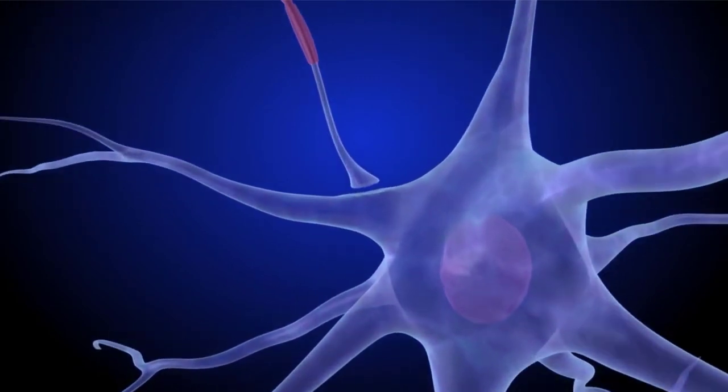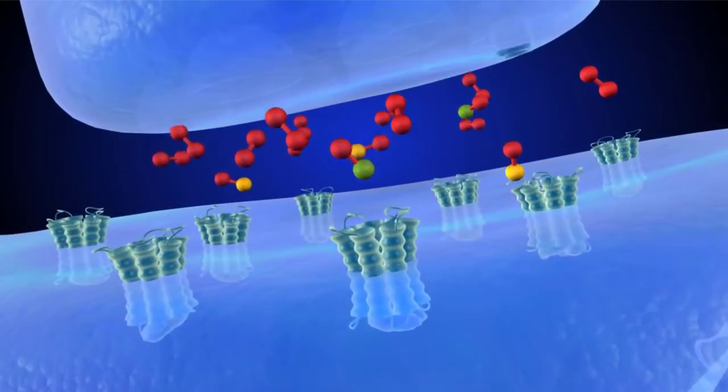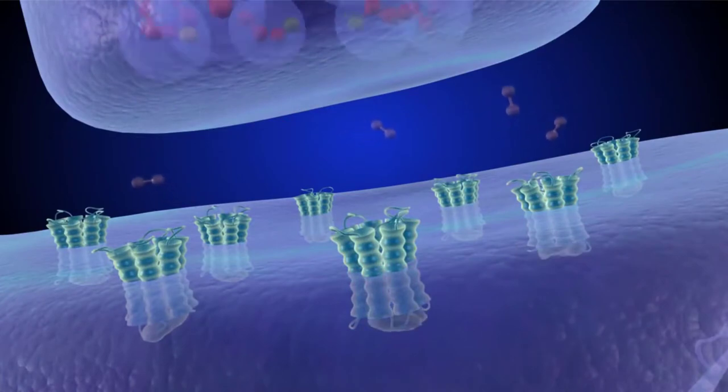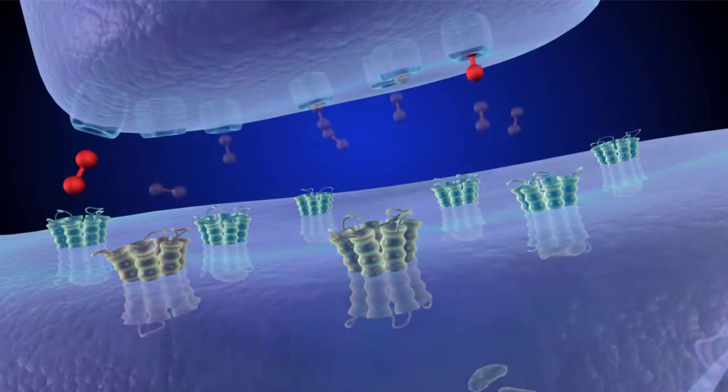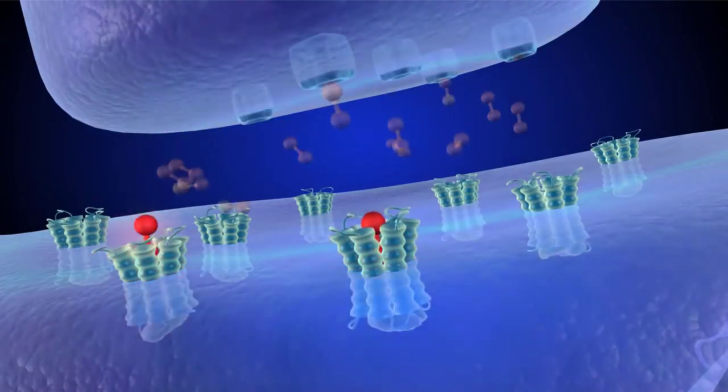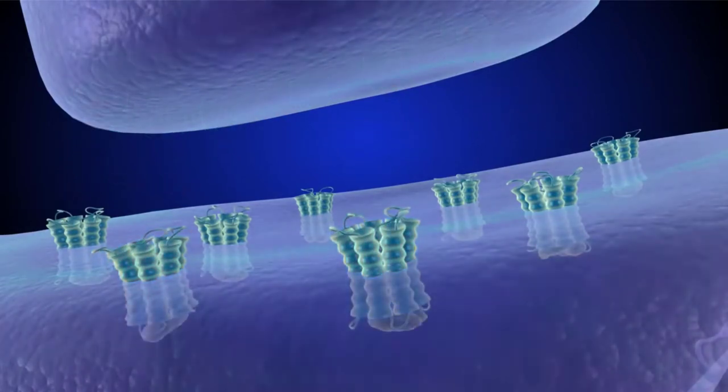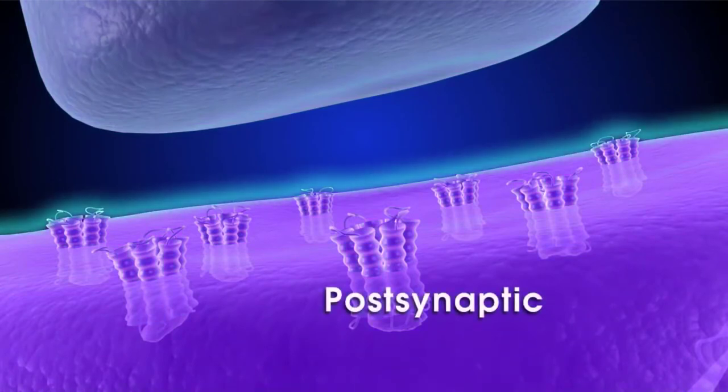How the limbic system contributes to repetitive addictive behavior requires a little background. When brain cells are activated, they generate an electric signal. This signal causes cells to release certain molecules called neurotransmitters. These are very specific chemical messengers. The chemical messages are then received by another cell. This is how brain cells communicate with one another. There are many different types of neurotransmitters which serve multiple functions. The small gap between cells is called the synapse. The cell sending the message is called presynaptic, and the cell receiving the message is the postsynaptic cell.